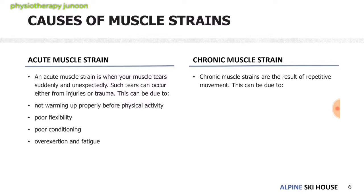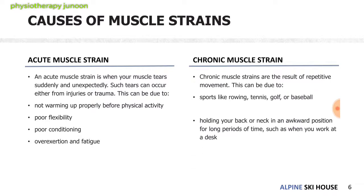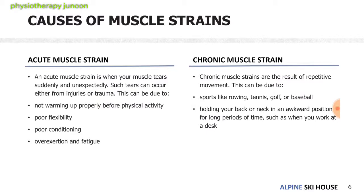Poor conditioning, over-exertion, and fatigue — such as doing overweight or overloading exercises — may also lead to strain. Chronic muscle strain results from repetitive movement. Sports like rowing, tennis, golf, and baseball, or holding your back or neck in an awkward position for long periods — such as working at a desk, using a computer, or using mobile phones — can lead to chronic muscle strain through poor posture.